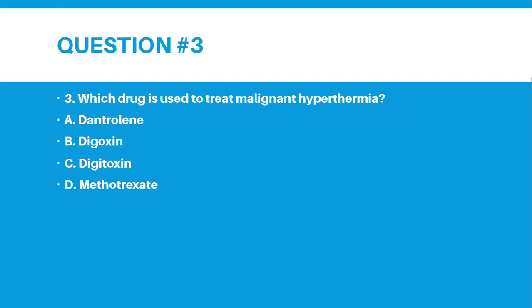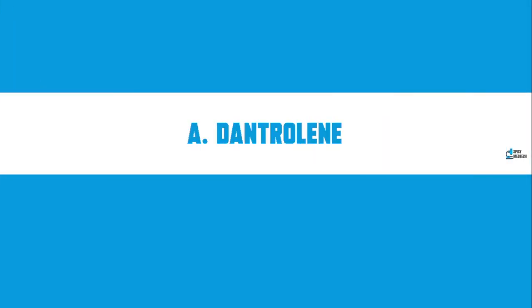Number 3. Which drug is used to treat malignant hyperthermia? A. Dantrolene, B. Digoxin, C. Digitoxin, or D. Methotrexate. The answer for number 3 is letter A — Dantrolene.